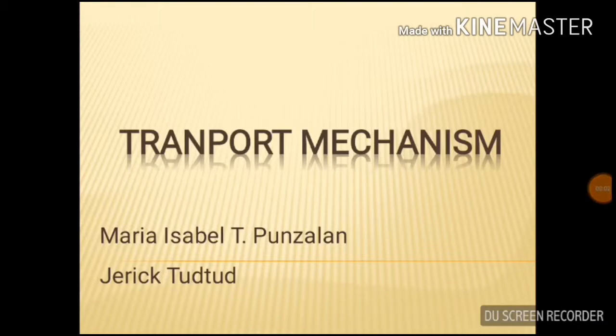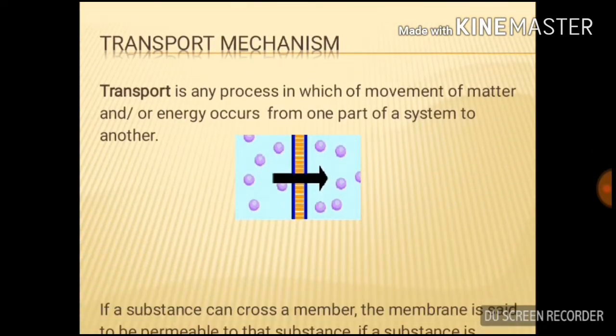We're going to talk about transport mechanism, which is any process in which the movement of matter and energy occurs from one part of the system to another. If a substance can cross a membrane, the membrane is said to be permeable to that substance, and if the substance is unable to pass the membrane, it is impermeable. Transport mechanism happens in the cell membrane, also called plasma membrane.